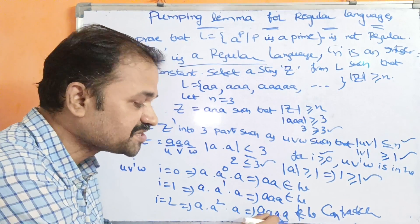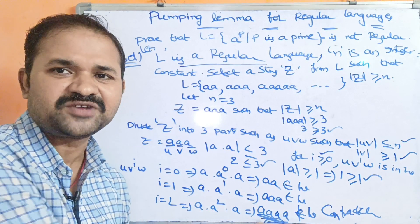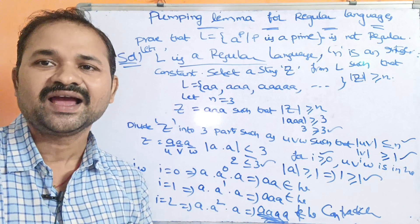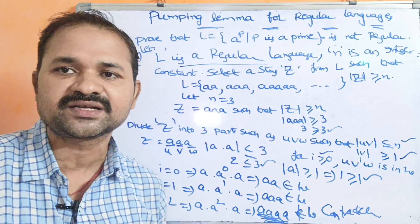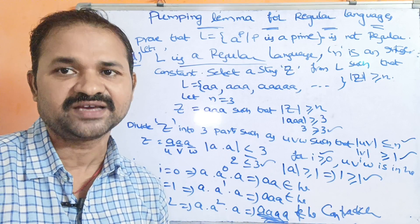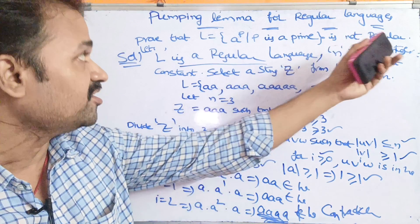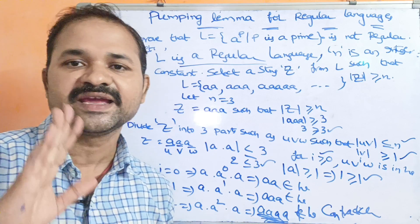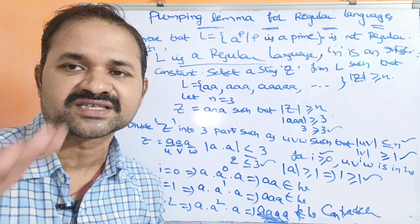Because this string 4 As is not present in the language, we can say that this language is not regular. Likewise, we can continue checking further values of I. In this way we can check whether a language is regular or not regular by using pumping lemma. Pumping lemma is mainly useful in order to prove a language as not regular.